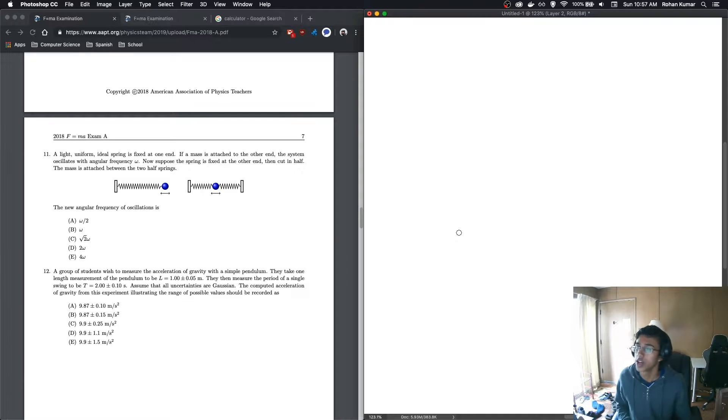Moving on to number 11. A light uniform ideal spring is fixed at one end. If a mass is attached to the other end, the system oscillates with angular frequency omega. Sorry, gotta get the Greek letters correct. Now, suppose the spring is fixed at the other end and cut in half. The mass is attached between the two half springs. The new angular frequency of oscillations is...